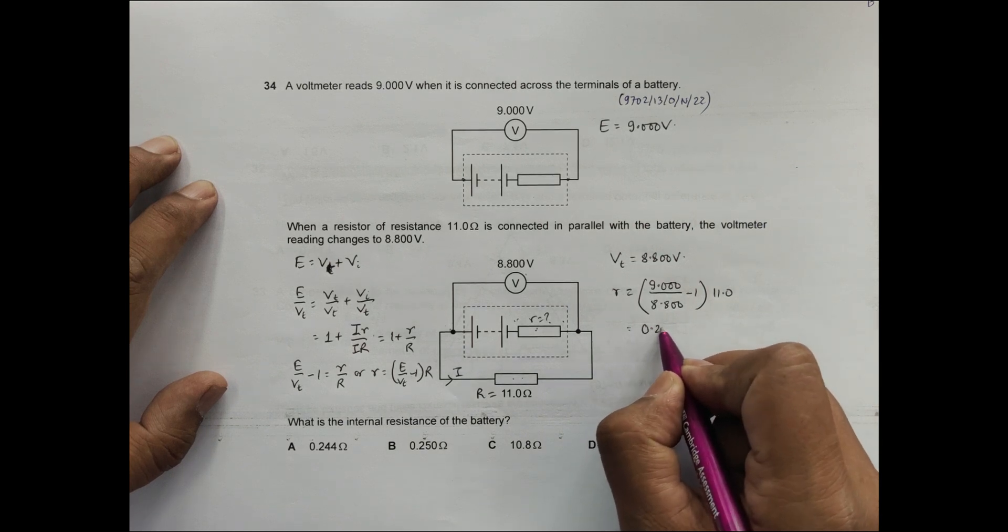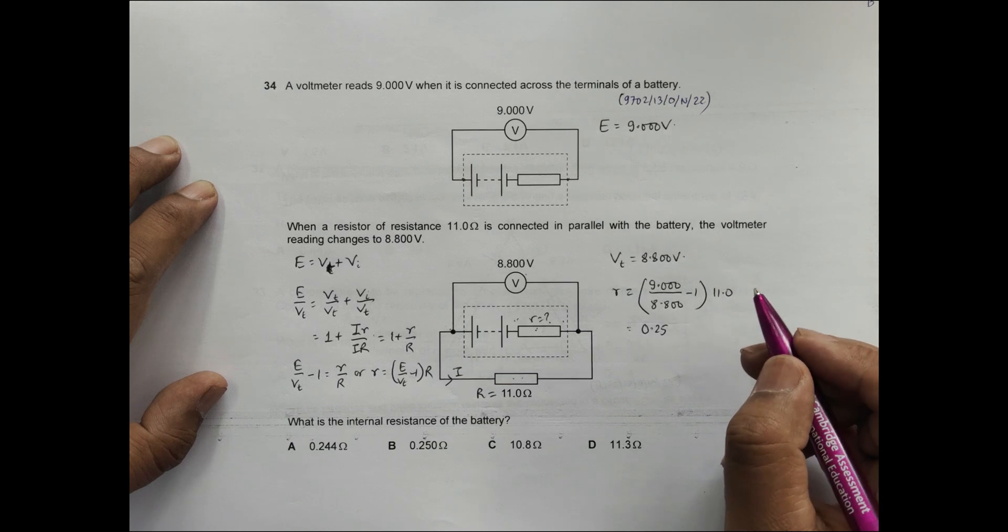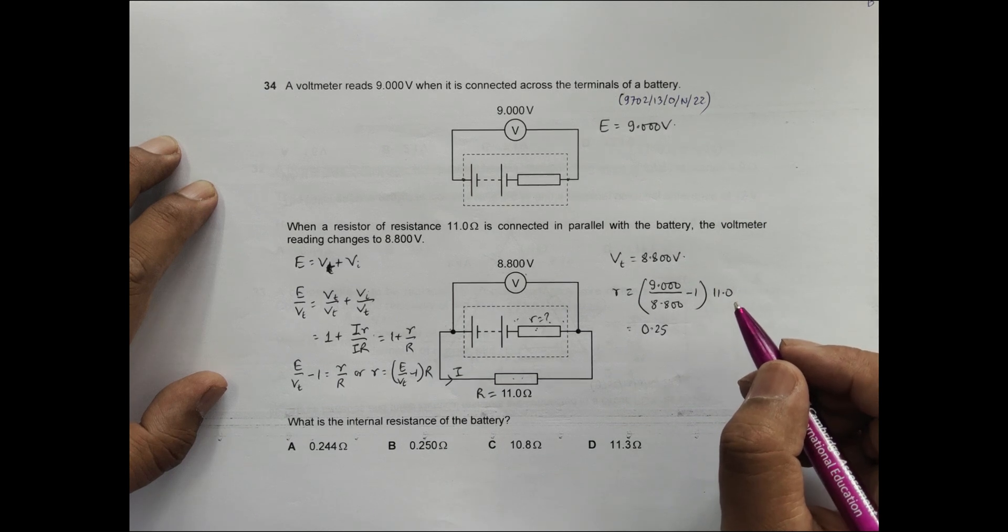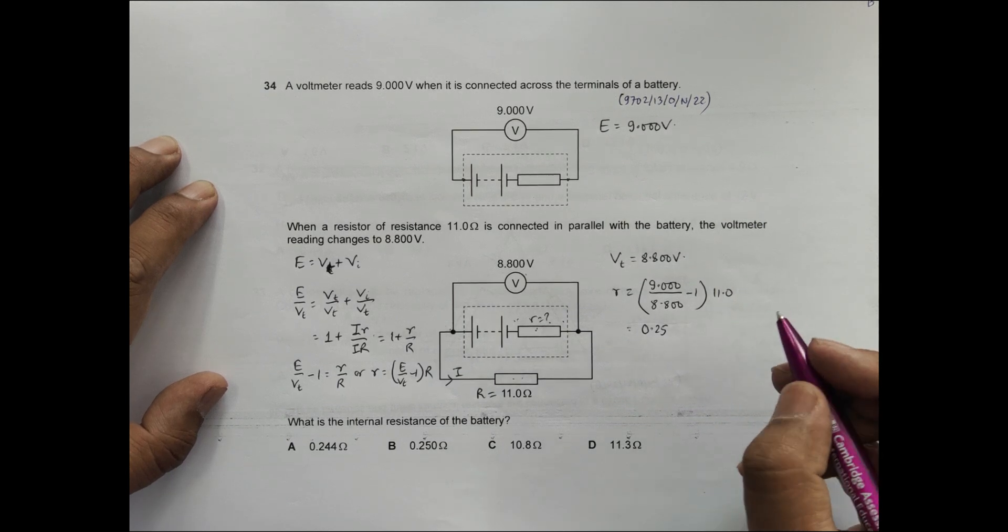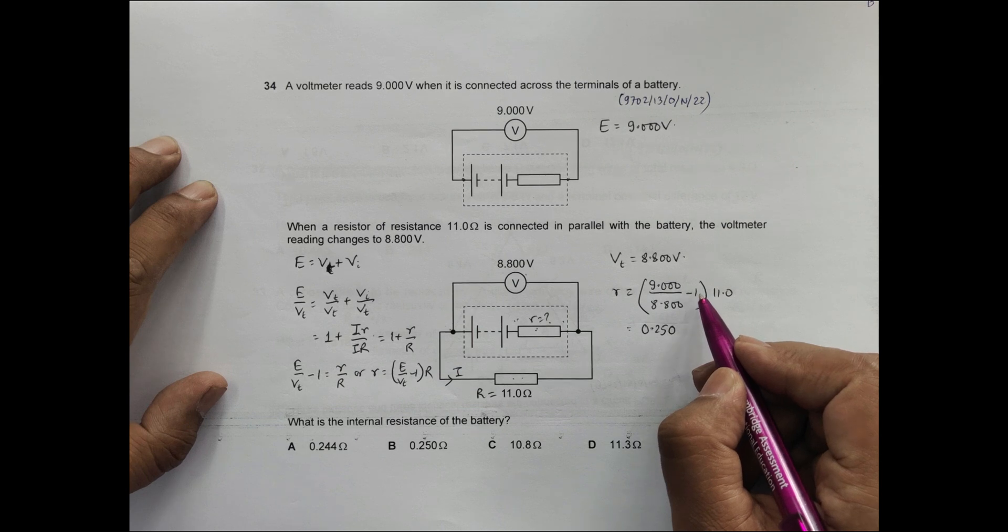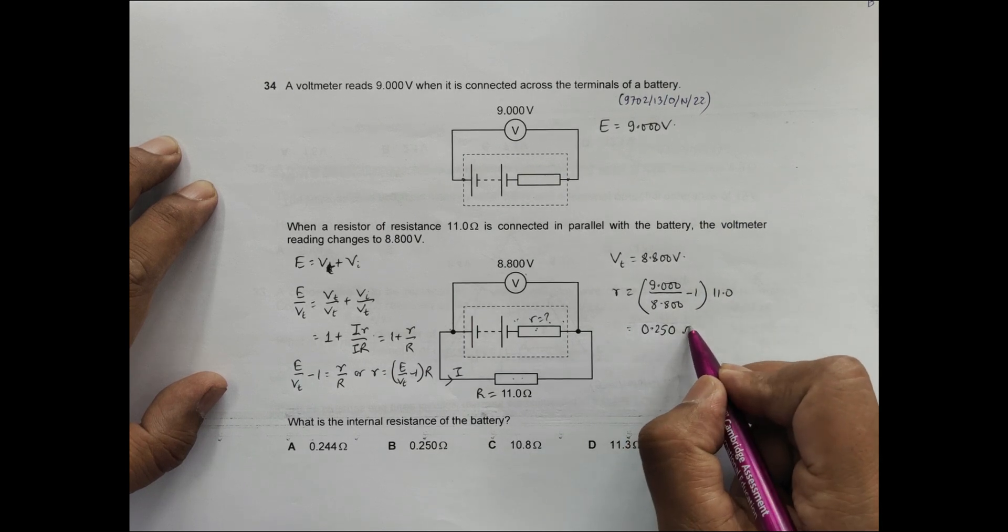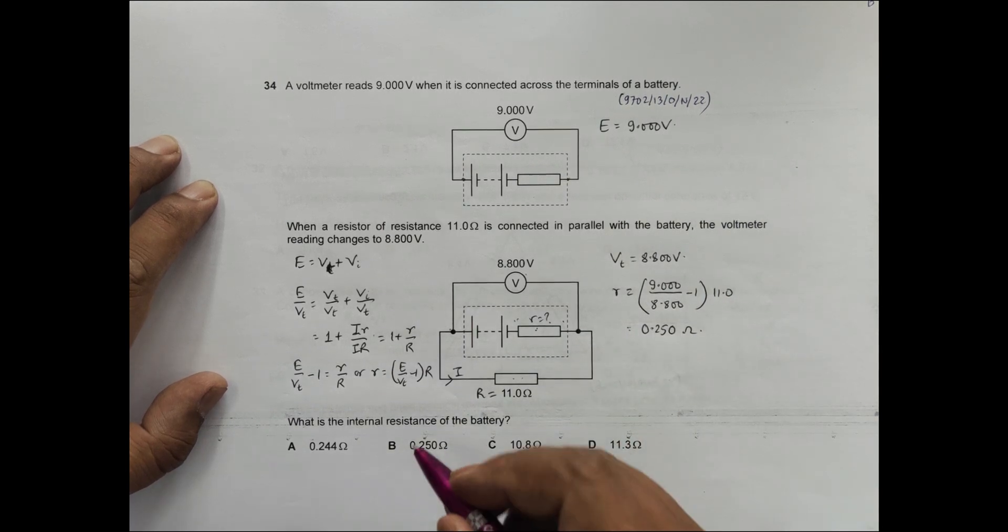Now in order to maintain the significant figures, or if I follow the rule of significant figures strictly, it should be three significant figures. This is infinite, which is one with infinite significant figures, this is three, so I'm using the least among these. So r should be this much. If I go to the answers, this becomes the correct choice.